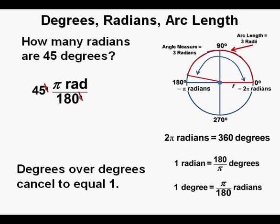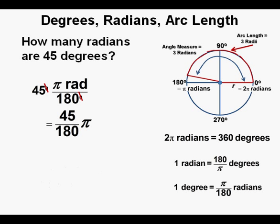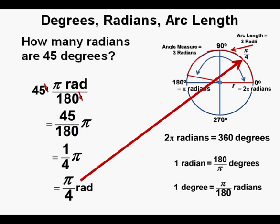To solve, we use the conversion factor: one degree equals pi over 180 radians. So we have 45 degrees times pi radians per 180 degrees — the degree units cancel. Rather than multiplying 45 by 3.14 and dividing by 180, keep the angle in terms of pi whenever possible to avoid rounding errors. This gives us 45 over 180 times pi, which reduces to one-fourth pi, written by convention as pi over 4 radians.